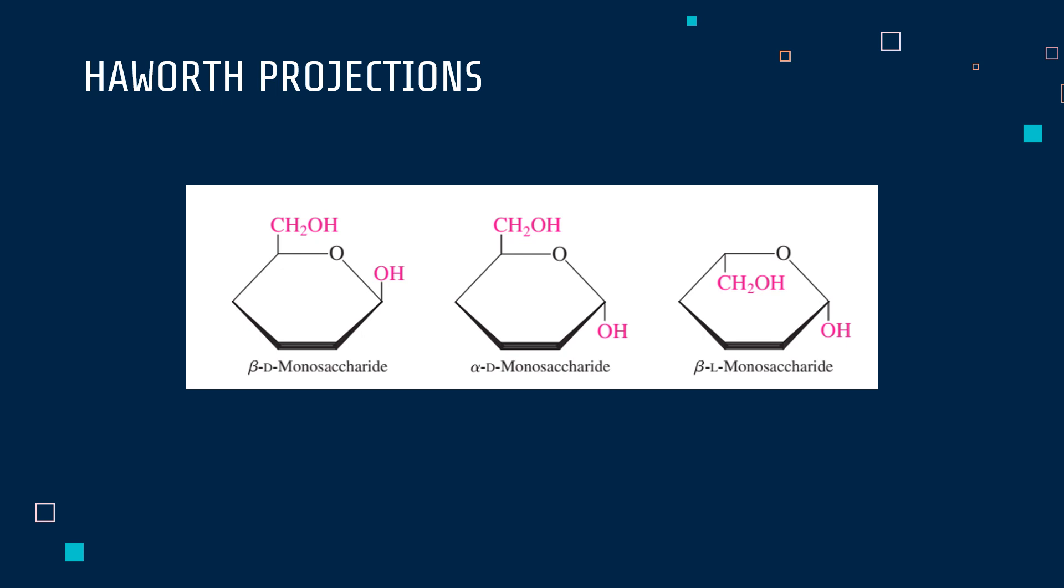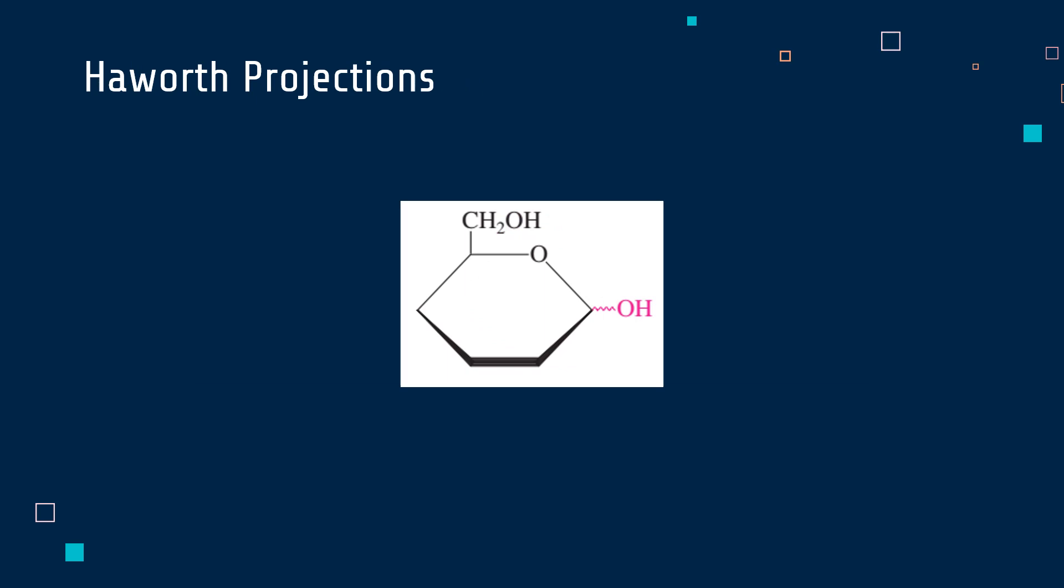So here we have the beta D-monosaccharide with both the CH2OH and OH group pointing upwards. And then next we have the alpha D-monosaccharide, which has the CH2OH pointing upwards and the OH group, which is below the ring. The beta L-monosaccharide has both the CH2OH group and the OH group pointing downwards. When alpha or beta configuration does not matter, the OH group on carbon number one is placed in a horizontal position, and a wavy line is used as the bond that connects it to the ring.